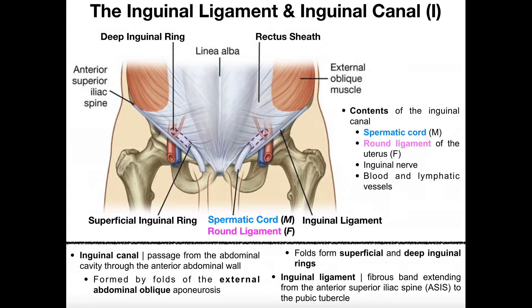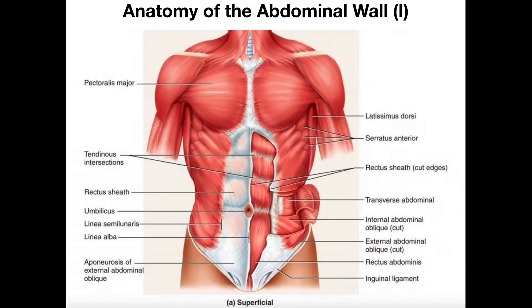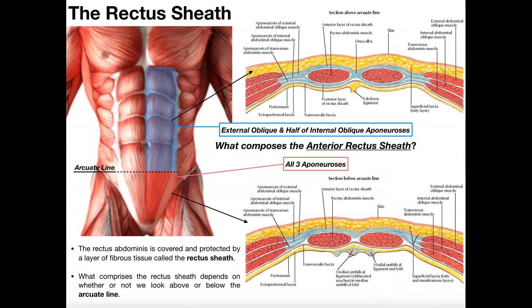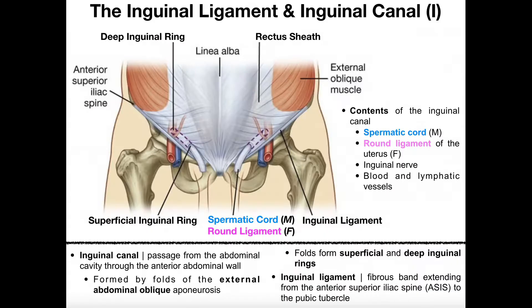Hopefully at this point you understand a little bit about the structure of the anterior abdominal wall — the muscles there, the rectus sheath, the aponeuroses — and we're going to use some of that knowledge to learn about the inguinal canal and ligament.